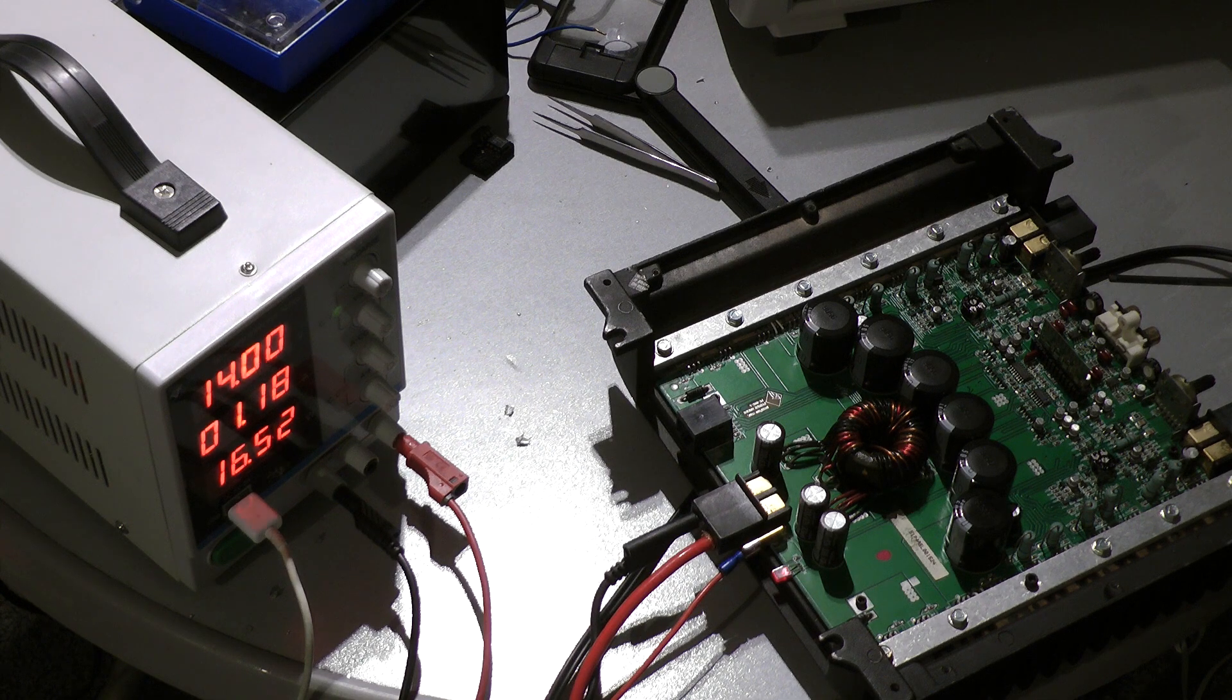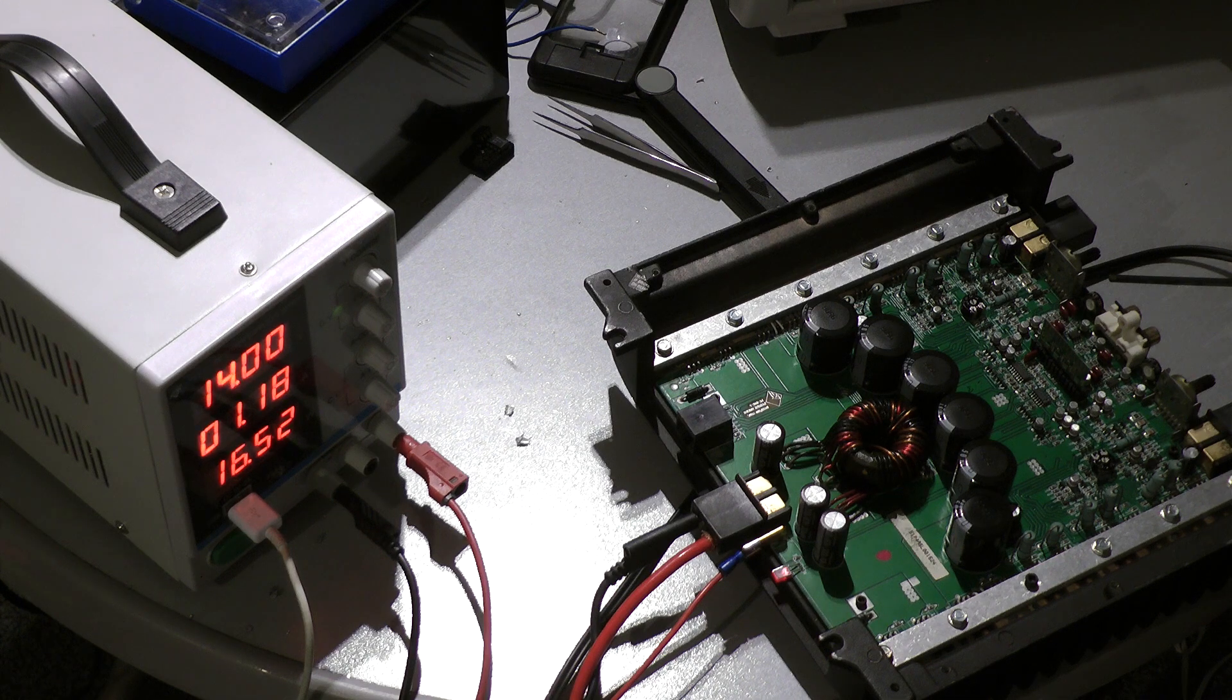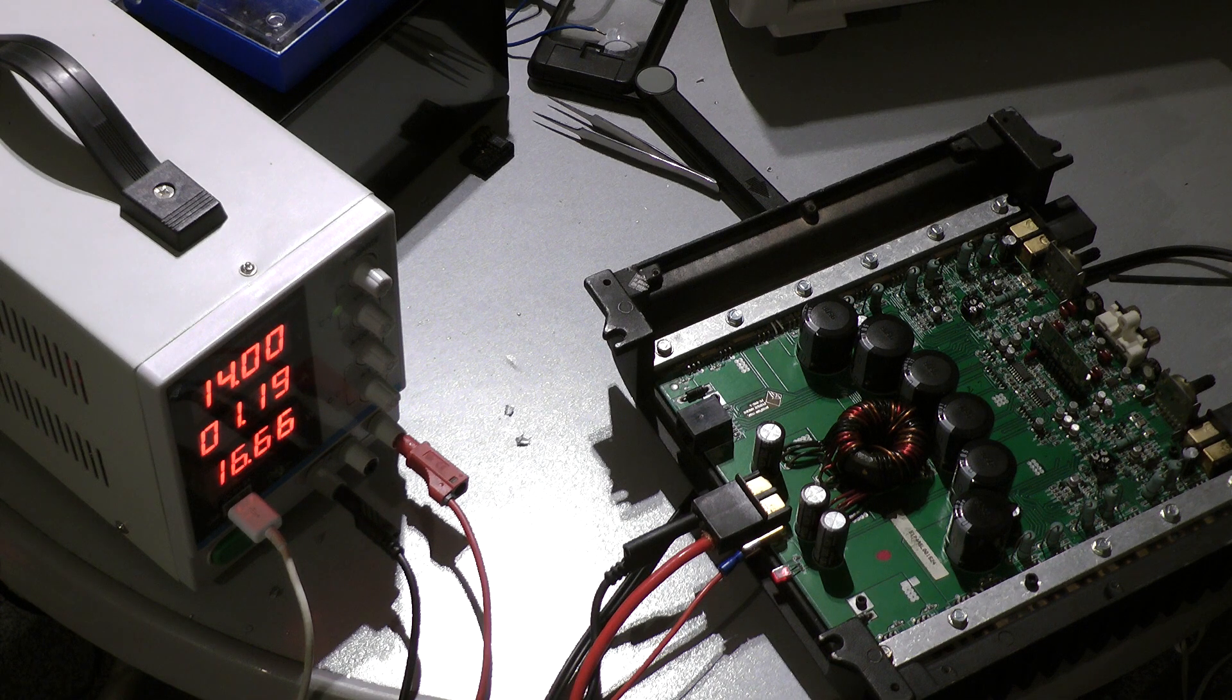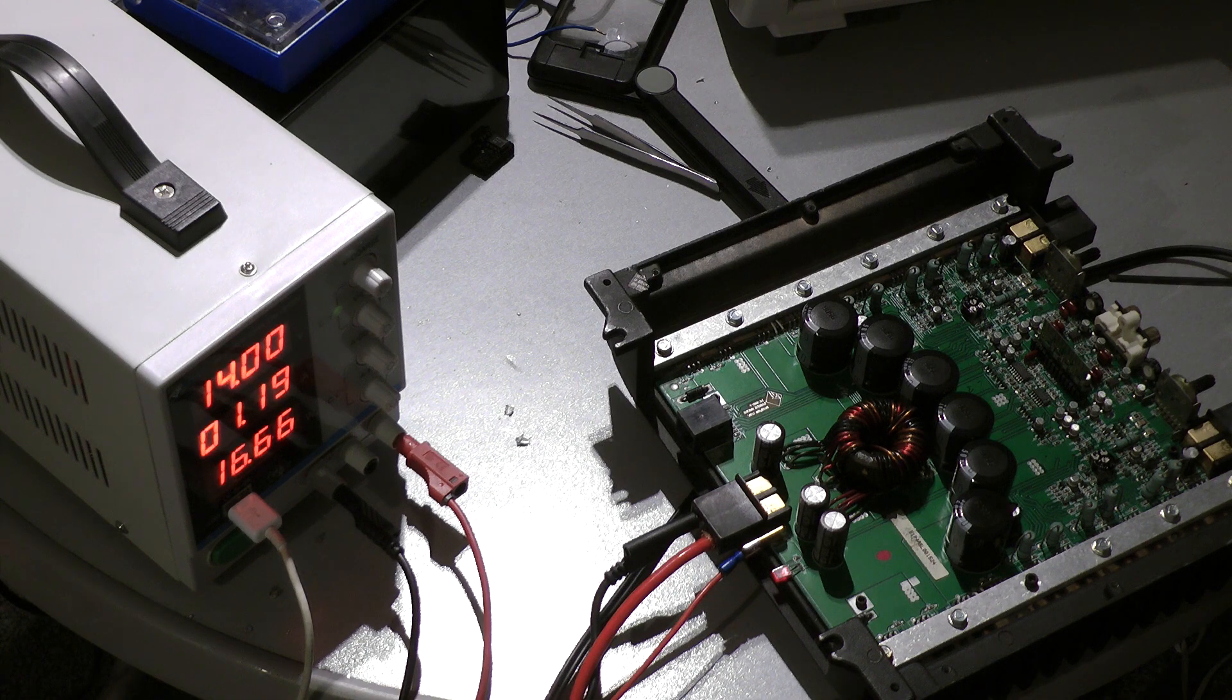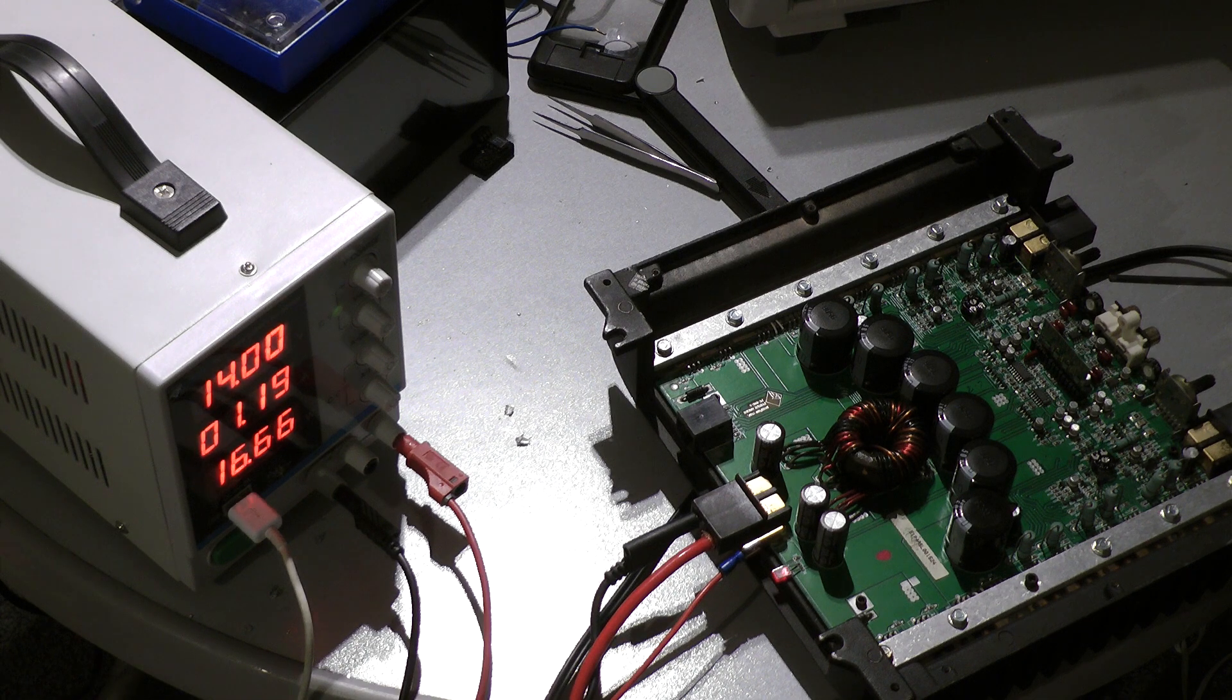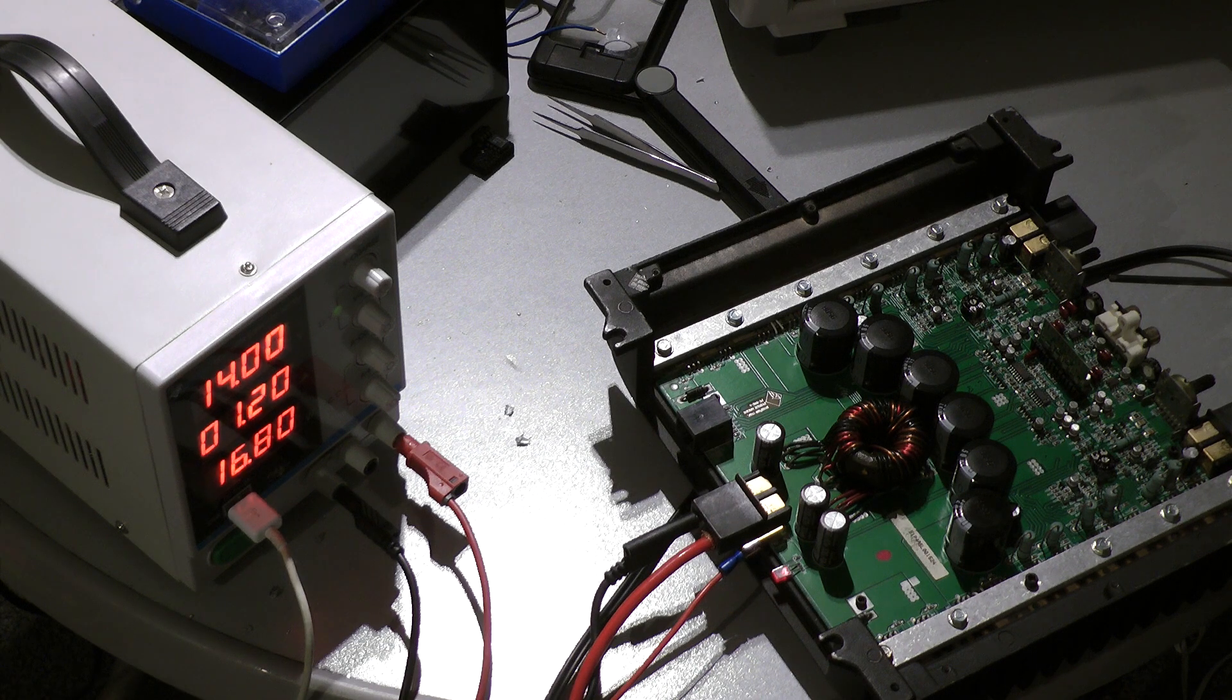This is the short version of adjusting the idle current, without checking the output. The idle current affects the sound quality of an amplifier. So I will just connect a 2 ohm load for each channel, and then I will hook up my scope and check for crossover distortion.